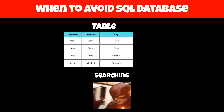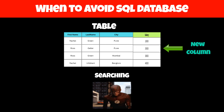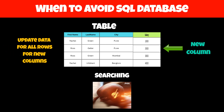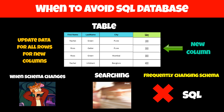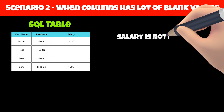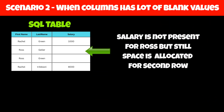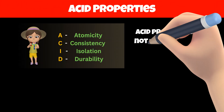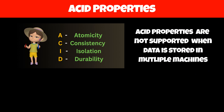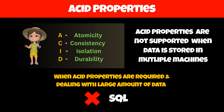However, when the schema of a table changes — meaning if we add new columns — then we have to update the value of that column for all rows, which is a time-consuming operation. So SQL is not a good choice for databases where the schema changes frequently. SQL also allocates space for all columns even if a row doesn't have a value for that column, which leads to wastage of memory. Therefore, you should avoid SQL if some columns may not contain values, or if you are dealing with a large amount of data.